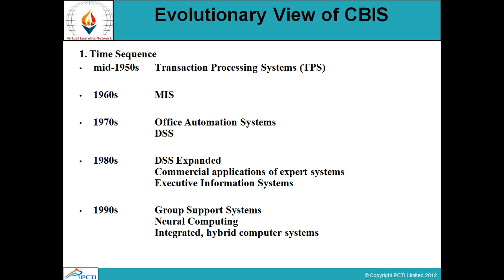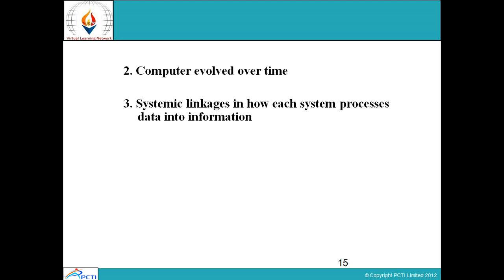The evolutionary view of CBIS: In the 1950s, the entire computer-based information system was called the TPS — Transaction Processing System. In the 1960s, it was termed MIS. In the 1970s, it was called an Office Automation System. In the 1980s, it expanded to commercial applications of expert systems and executive information systems. In the 1990s, it became the Group Decision Support System, incorporating neural computing and hybrid computer systems. Because computers evolved over time, systematic linkages exist in each system's process, data, and information.